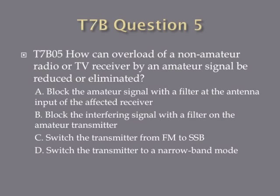Question 5. How can overload of a non-amateur radio or TV receiver by an amateur signal be reduced or eliminated? A. Block the amateur signal with a filter at the antenna input of the affected receiver. B. Block the interfering signal with a filter on the amateur transmitter. C. Switch the transmitter from FM to single sideband. Or D. Switch the transmitter to a narrow band mode.